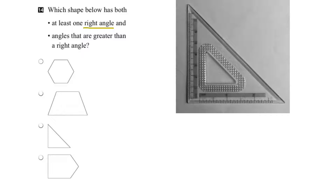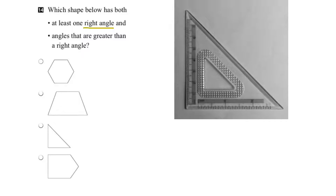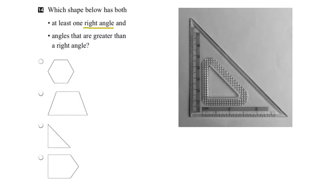You might recognize this as a triangle from a math set. This triangle here has a corner right there, and that corner is a right angle. So generally speaking, if two lines make a corner, and we say in math terms that this corner is 90 degrees, then it is a right angle.